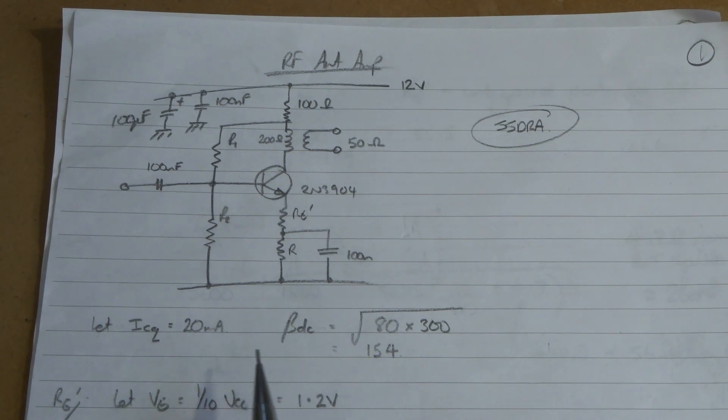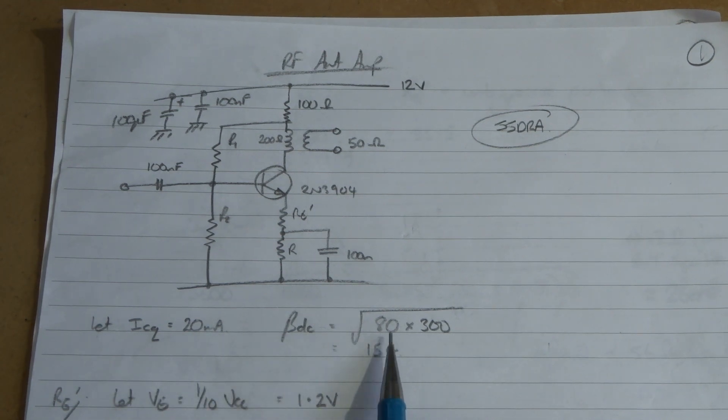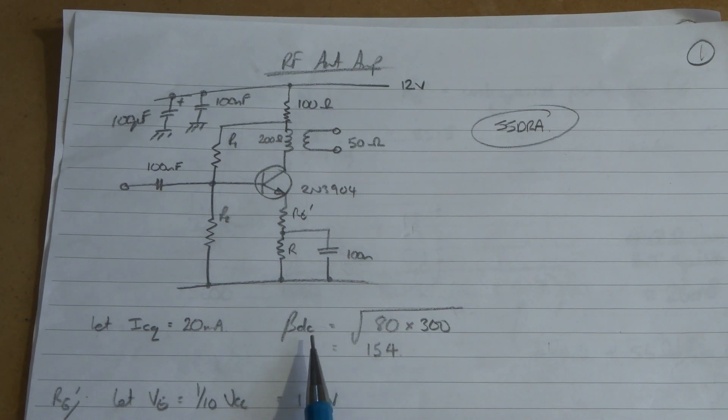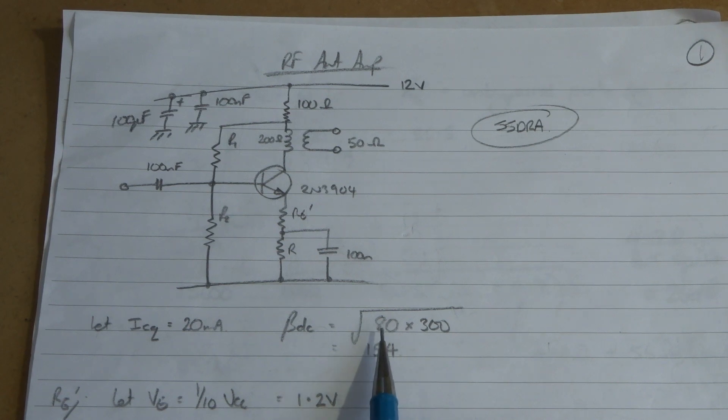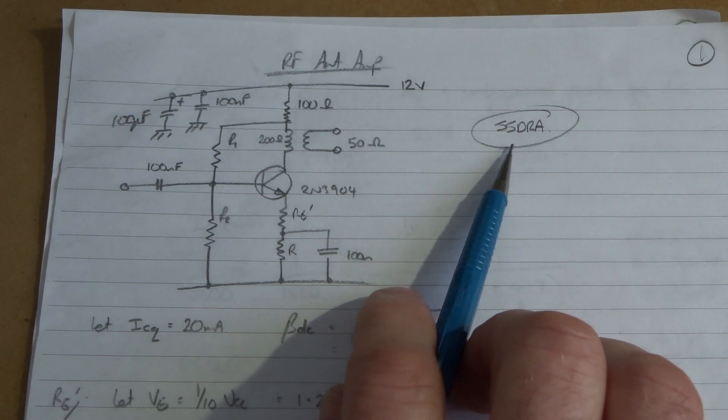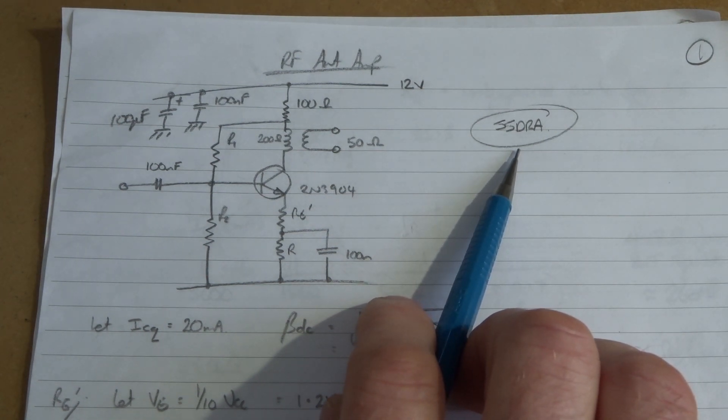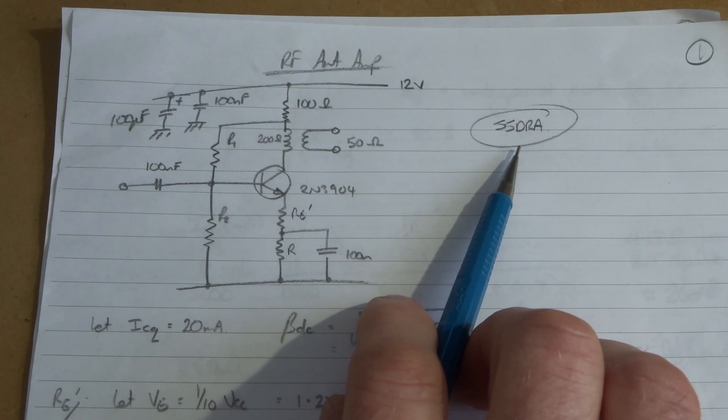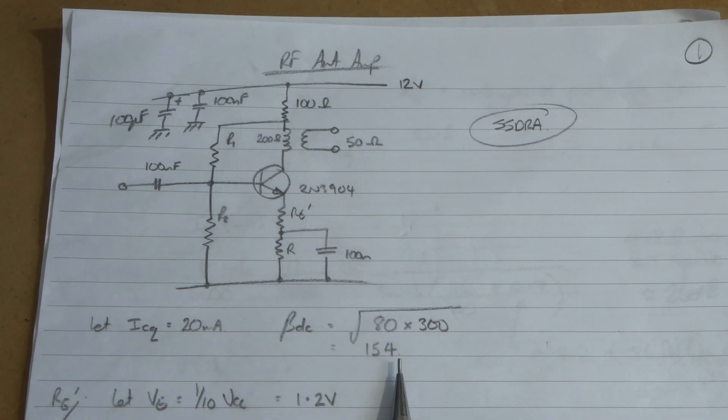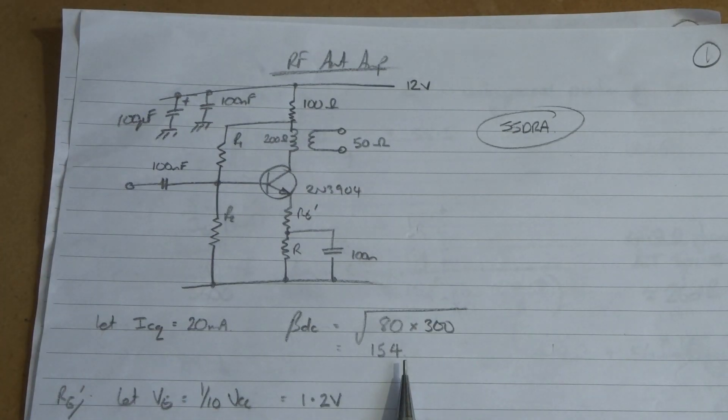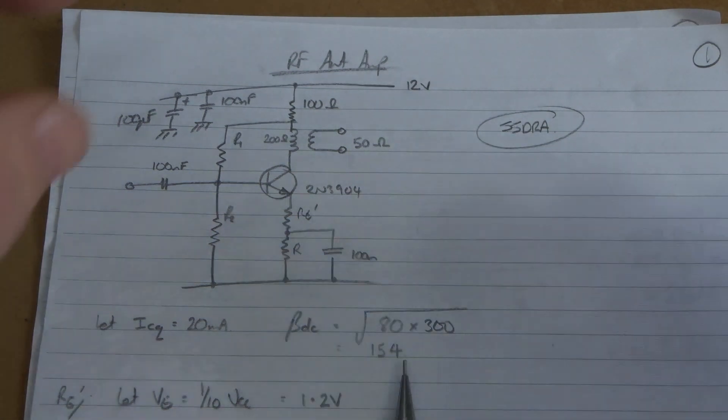From the spec sheet at 20mA, you don't get an exact figure for minimum and maximum HFE or beta DC, but by looking between the values I've come up with 80 for minimum and 300 for maximum. In line with the guidance from SSDRA and experimental methods for RF design, I'm going to use the geometric mean - the square root of minimum times maximum - which comes out at 154.